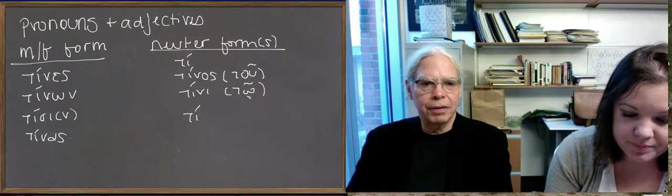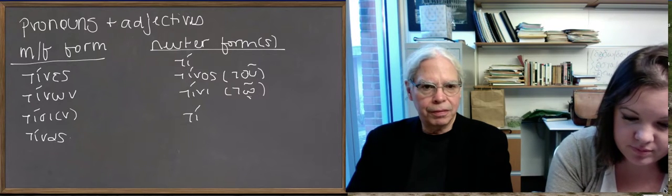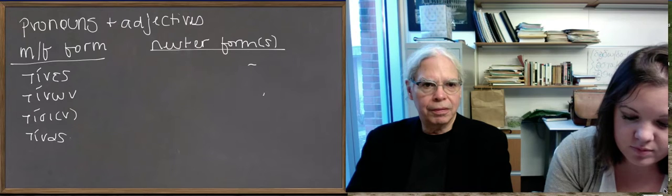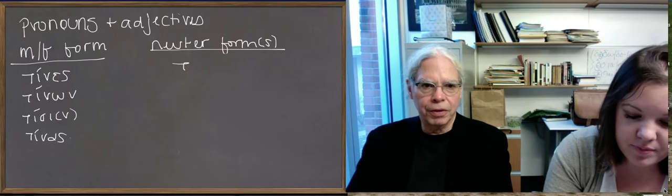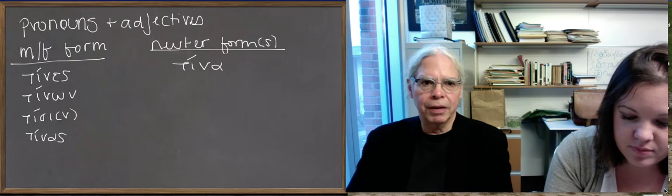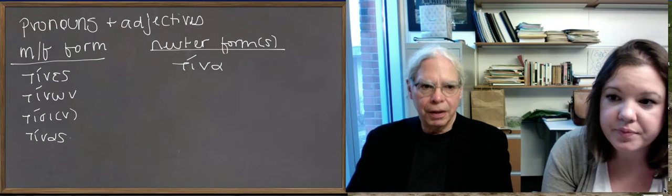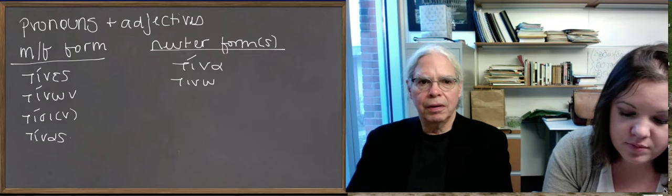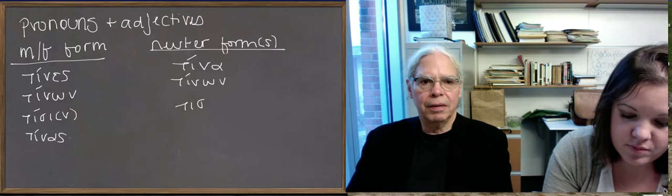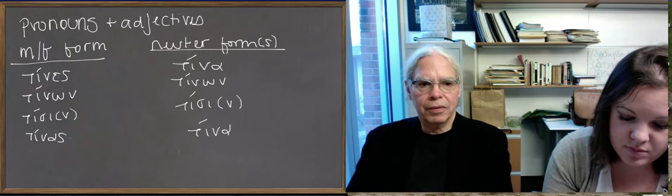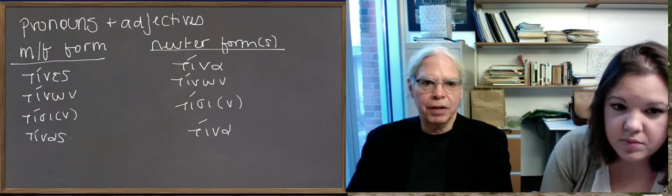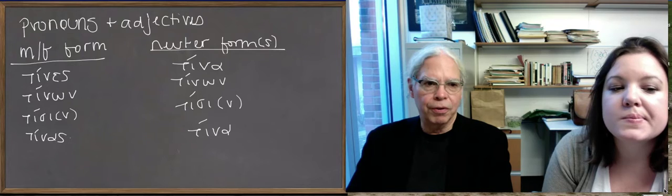And then the neuter plural. We've got τίνα, which looks, is the same form as the accusative singular masculine and feminine. So I have to be careful about that. And then τίνων, τίσι, and τίνα. And so it's a pretty standard third declension form.